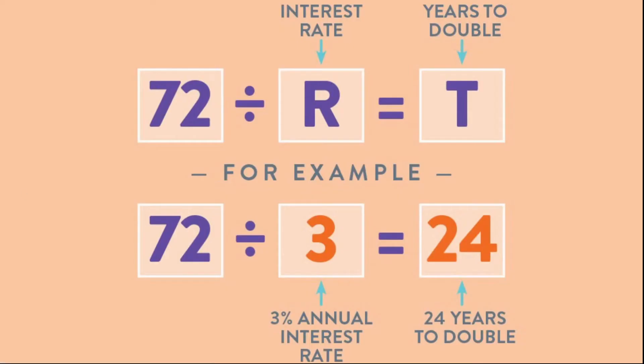The formula for the Rule of 72 is: Years to Double = 72 divided by the interest rate. For example, if you're getting a 3% return every year, that means 72 divided by 3 equals 24 — so it's going to take you 24 years to double your money.